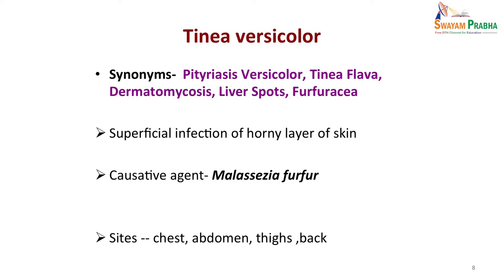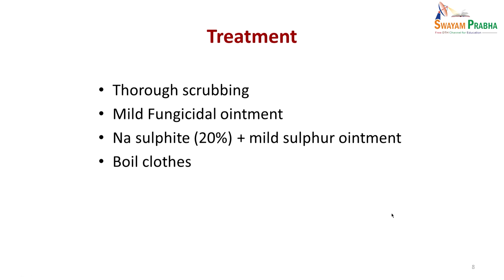The most often involved sites are the chest, abdomen, thighs, and back, and the patient comes mainly because of the cosmetic problem and the patches increasing over time. Treatment involves thorough scrubbing and applying mild fungicidal ointment such as sodium sulphide 20% plus mild sulfur ointment. The patient should keep clothes separate, wash and boil them, as it is easily transmitted to other family members. Treatment may take weeks.